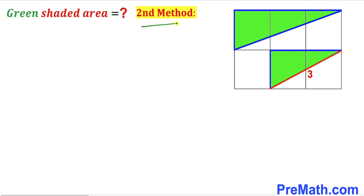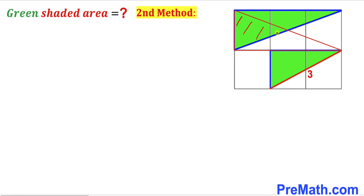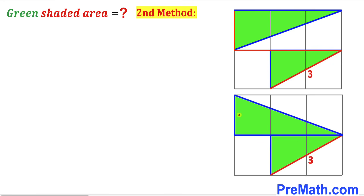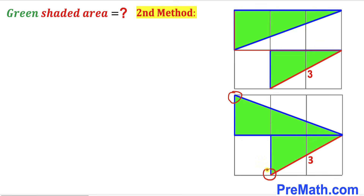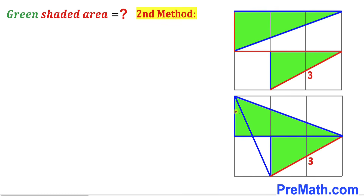Now I'm going to share the second approach. Let's focus on this right triangle and make an observation: the area of this right triangle is going to be equal to the area of this other right triangle, since both triangles have the same base and the same height. I have transformed this right triangle, and now I'm going to connect these two vertices. We can see that this tiny right triangle and this tiny right triangle are congruent triangles.